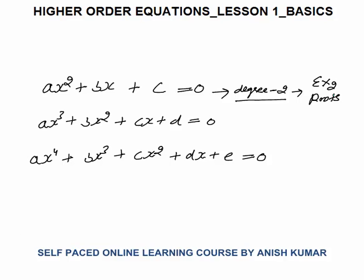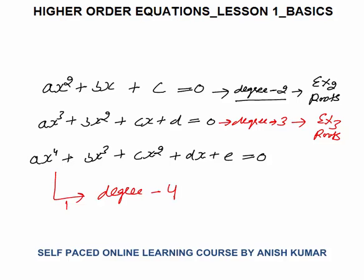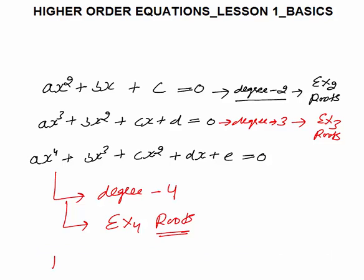Now look at this equation: Ax cubed plus Bx squared plus Cx plus D. You can see that this degree is 3, because the highest power of variable x is 3. So as a degree 3 equation, this is called a cubic equation and it will have exactly 3 roots. Now look at this degree 4 equation — it will have exactly 4 roots. Roots means the value of x which satisfies the equation. In the same way, a degree 5 equation will have exactly 5 roots, and a degree n equation will have exactly n roots.